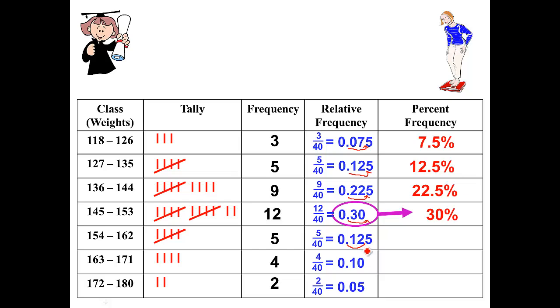Two places to the right again becomes 12.5%. Here's the other place where we added the zero, so we would have two places, 10%. And when we add two places here, the last entry becomes 5%. And that completes our percent frequency table.